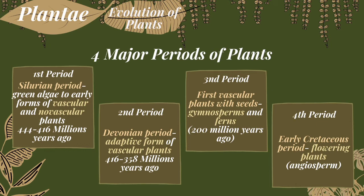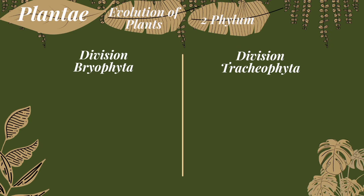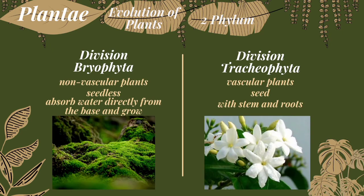Now we know the evolution of plants. Let's proceed to the two phyla, or divisions, of kingdom Plantae: division Bryophyta and division Tracheophyta. Bryophyta is a non-vascular plant, meaning it has no stems or roots, while Tracheophyta is the vascular plant, meaning it has stems and roots. Along with that, Tracheophyta has seeds while Bryophyta doesn't. Because Bryophyta does not have stems or roots, it directly absorbs water from the soil, while Tracheophyta absorbs water from the roots.